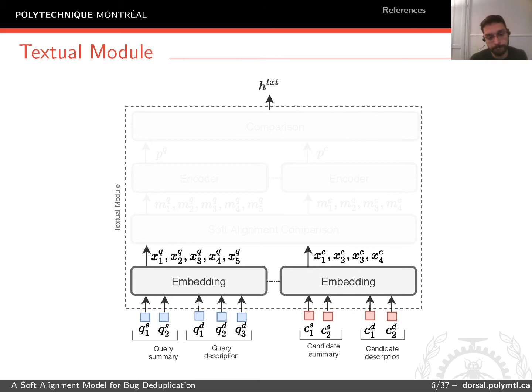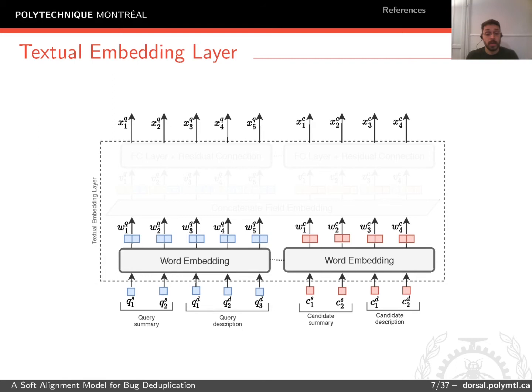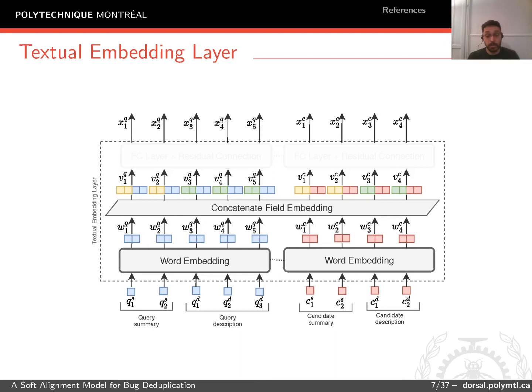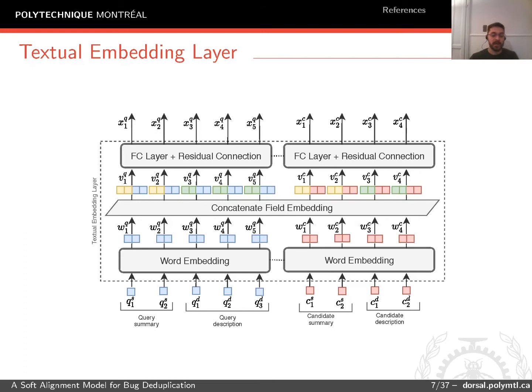The first layer of the textual module is an embedding layer. It contains a word embedding layer that represents each token as a vector. We then connect a field embedding to these vectors — the field embedding provides information about the origin of the token, whether it came from the summary or description. Finally, we pass them to a fully connected layer with a residual connection that outputs the final word embedding.